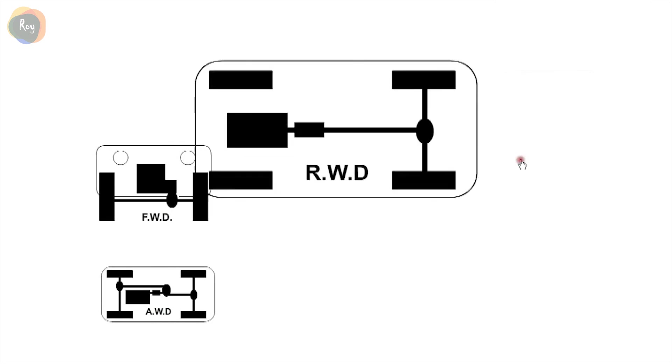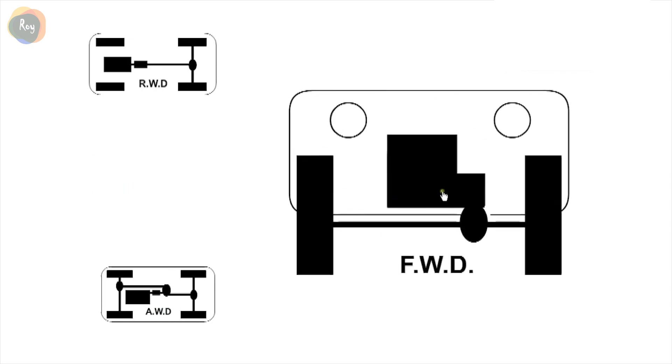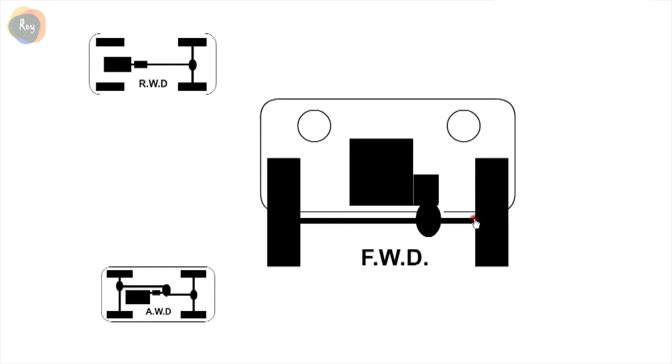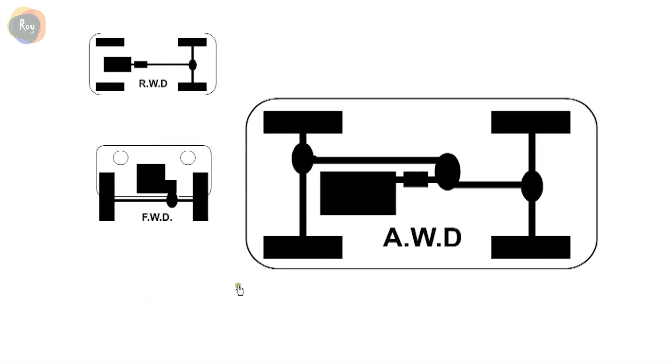In a rear-wheel drive car, we have the engine, clutch, transmission, and the differential located in the back axle. In a front-wheel drive car, we have the engine, transmission, and a differential.